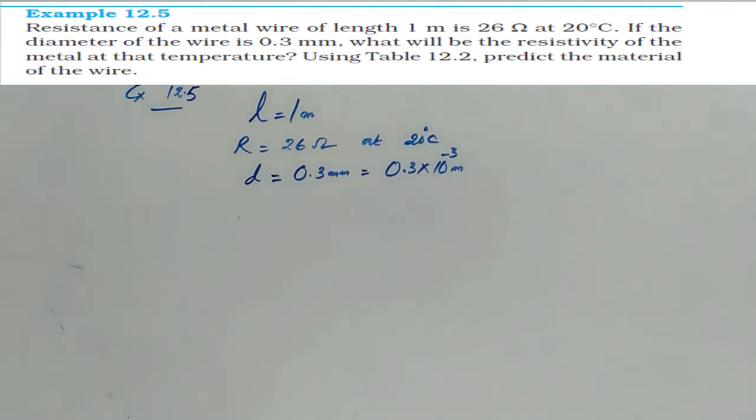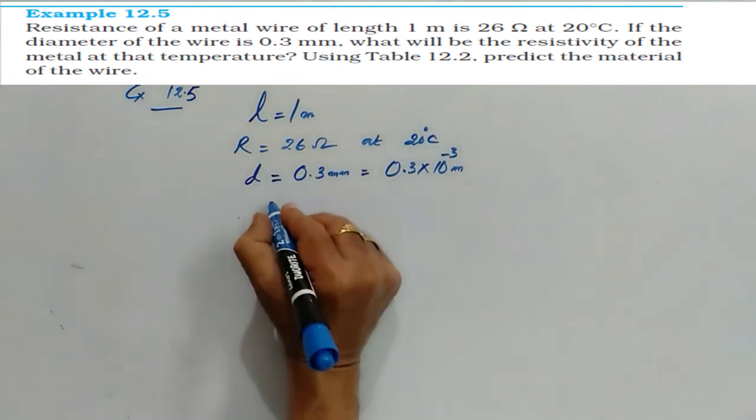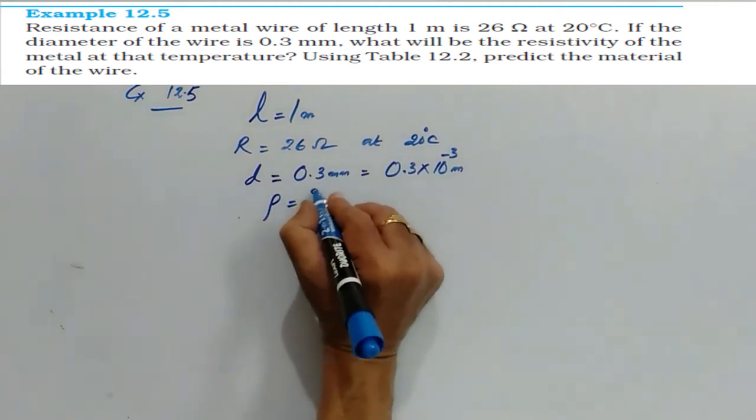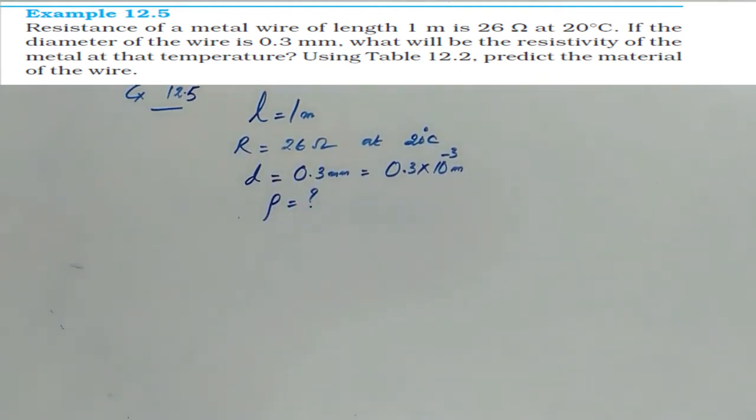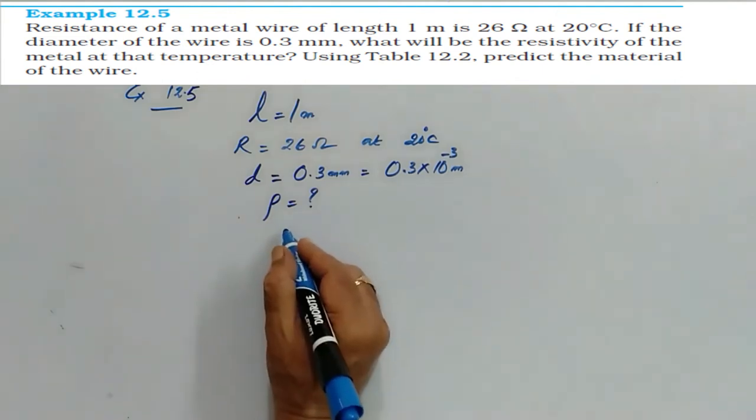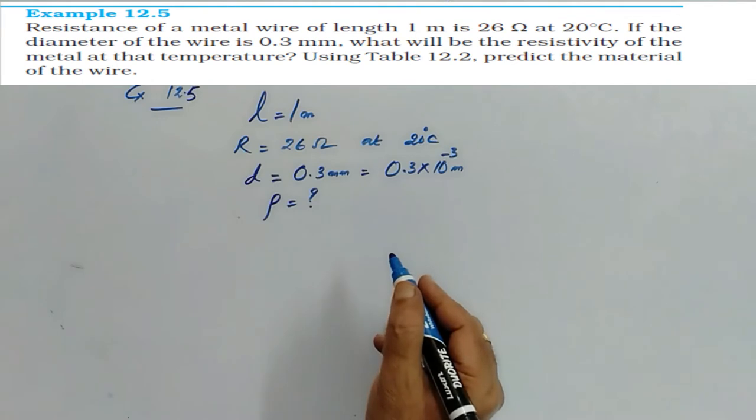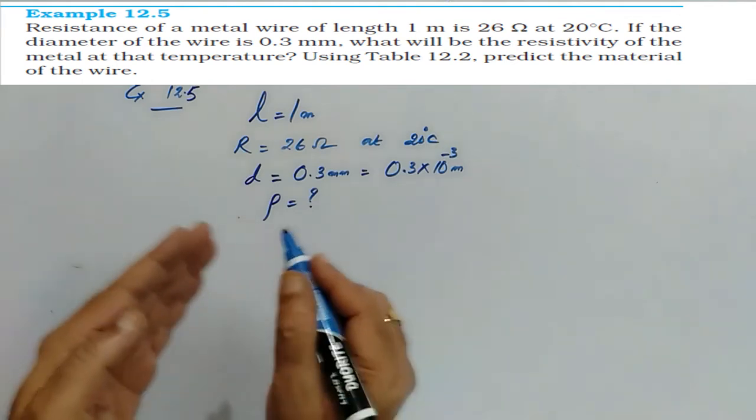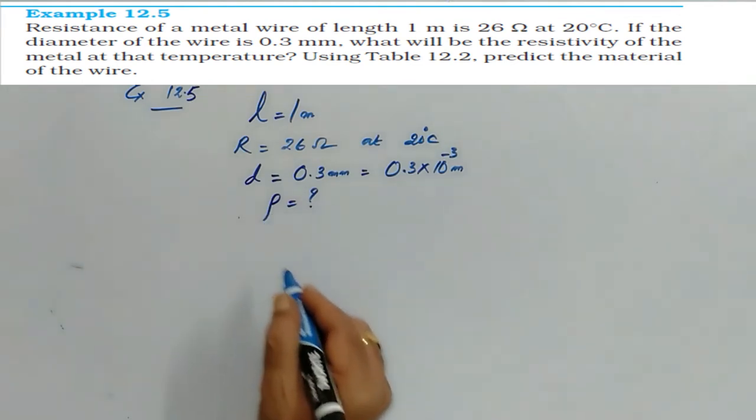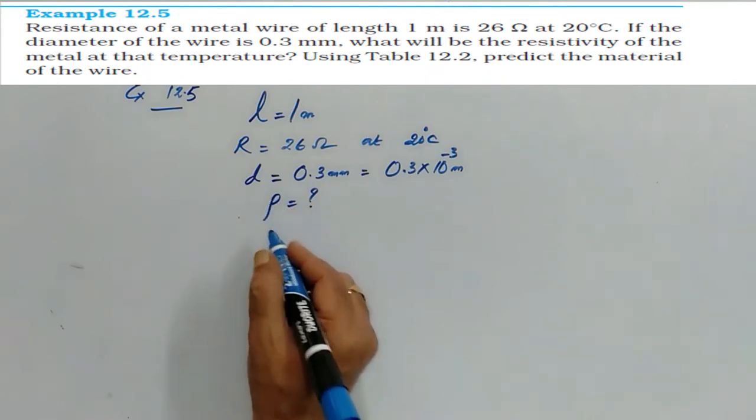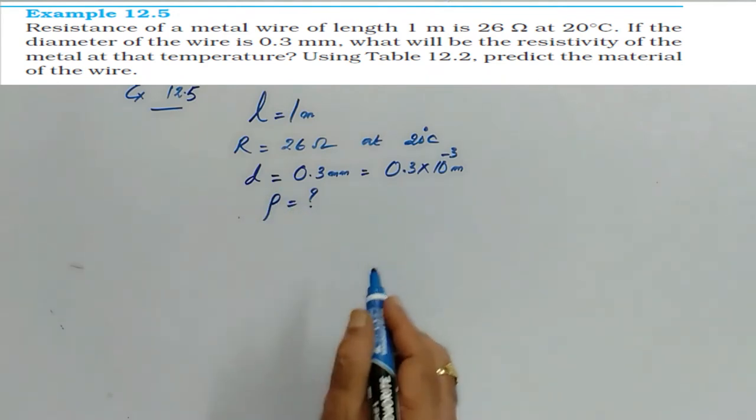What will be the resistivity? So resistivity is asked. And for that, in the extension, after finding the resistivity, you have to name that by seeing the table. Even in examination also, the table will be given. Then only you can identify. No need to remember the resistivity of any substance.